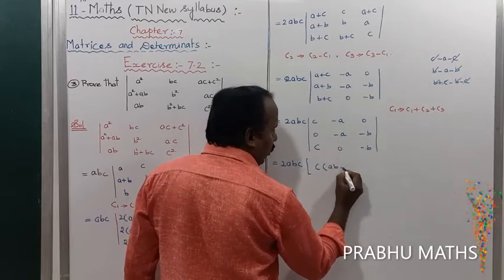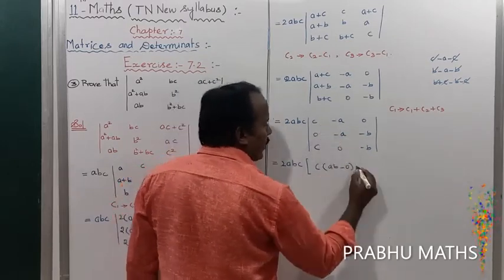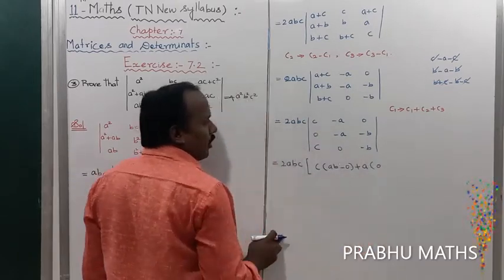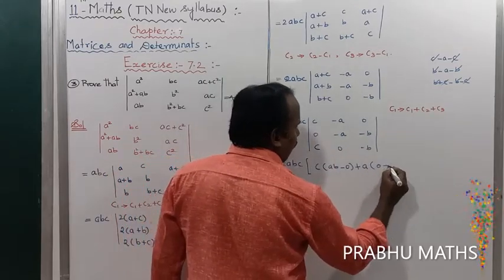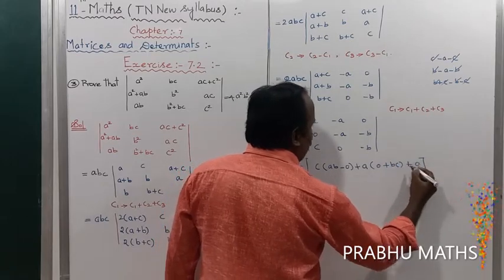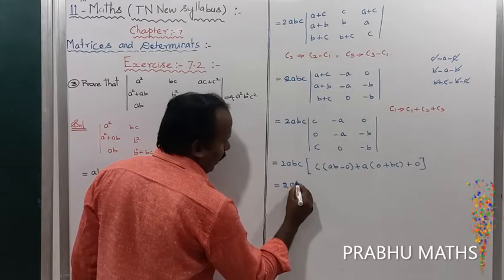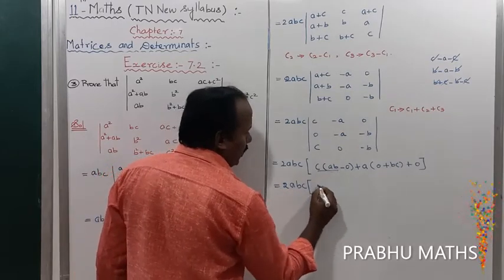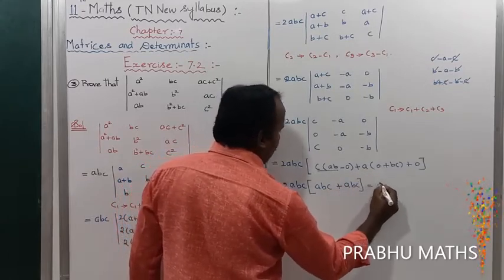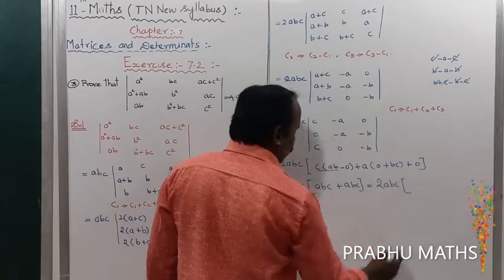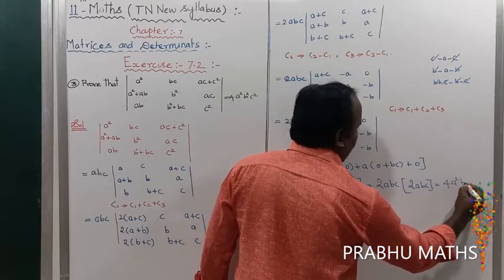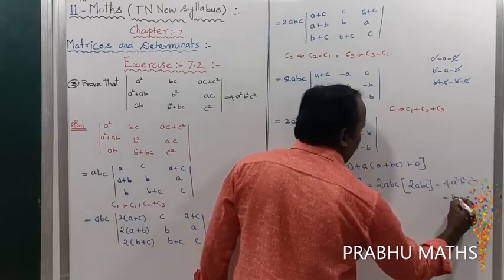The multiplication gives zero for several terms. The remaining multiplication of minus and minus into plus gives BC. So that equals 2 times of ABC, and the determinant multiplication gives ABC. Therefore 2 times ABC times 2 times ABC equals 4 times a squared b squared c squared, which equals the RHS.